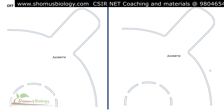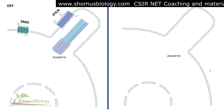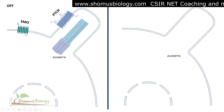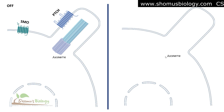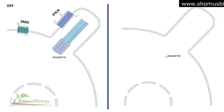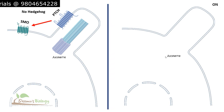On the left-hand side, when the Hedgehog protein is missing and signaling is off: on the surface of the cell, we are looking at two different receptors — PTCH (Patched) and SMO (Smoothened). Smoothened is a type of Frizzled class of receptor. The process begins when there is no Hedgehog present, and in that case, Patched is going to inhibit the functionality of Smoothened.